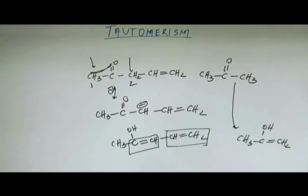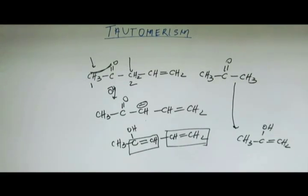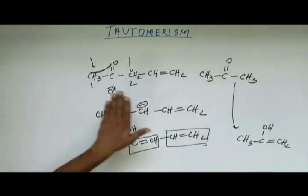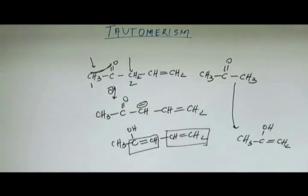This is how we understand the relative percentage of different tautomeric forms without doing experiments. The enol content of this substrate is going to be greater than acetone.